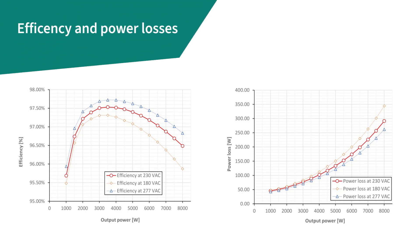The measured efficiency on the left and losses on the right of the complete power supply unit are shown at different AC line voltages: 277 volts AC, 230 volts AC, and 180 volts AC.